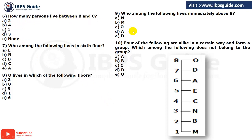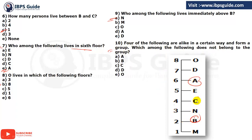Now let's see the questions. First: how many persons live between B and C? Between B and C there is only 1 person — option number C. Seventh question: who among the following lives on the 6th floor? On the 6th floor it is A — option number E. O lives on which floor? O lives on the 8th floor — option number B. Ninth question: who lives immediately above B? Immediately above B it is N — option number A. Four of the following are alike and form a group — which does not belong? O, A, C, and B are on even-numbered floors, but D is on an odd-numbered floor — so the answer is D.